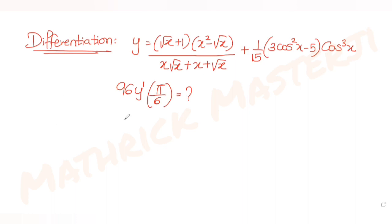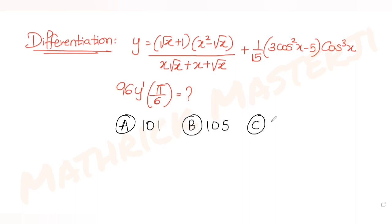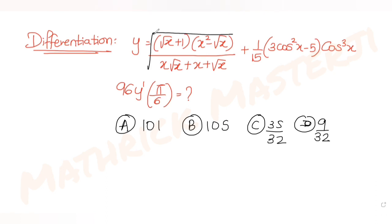The answer choices are 101, 105, 35 over 32, and 9 over 32. We need to figure out which one is correct. Let's try to solve this question, starting by finding the simplified form of the given expression.